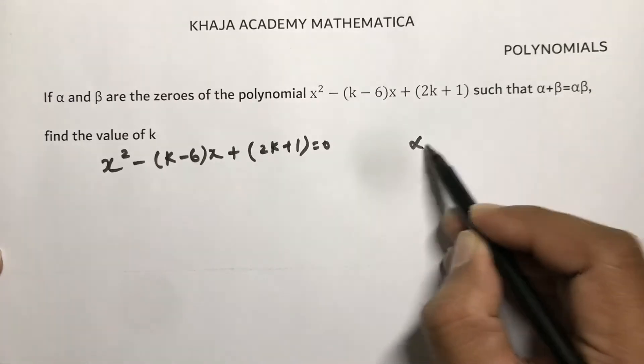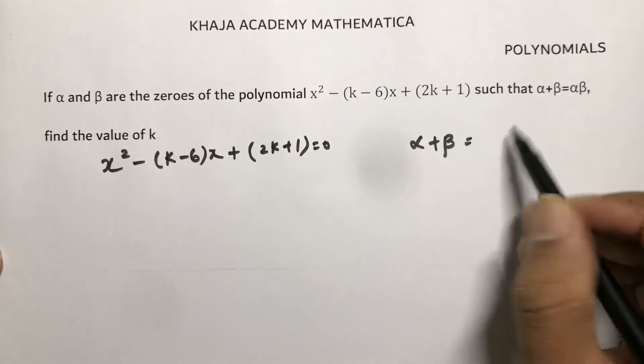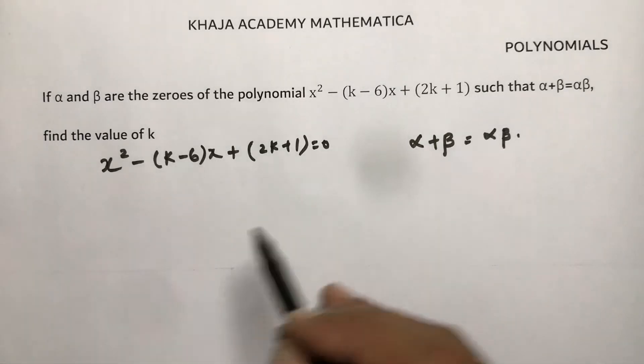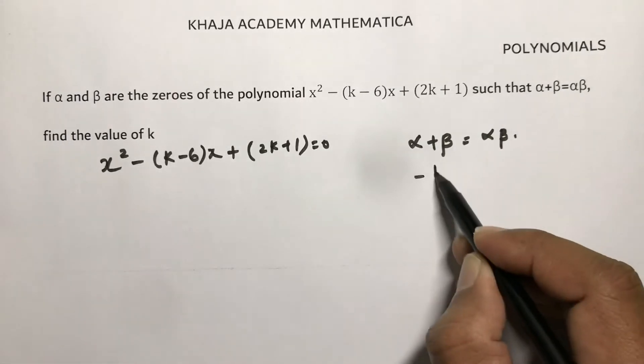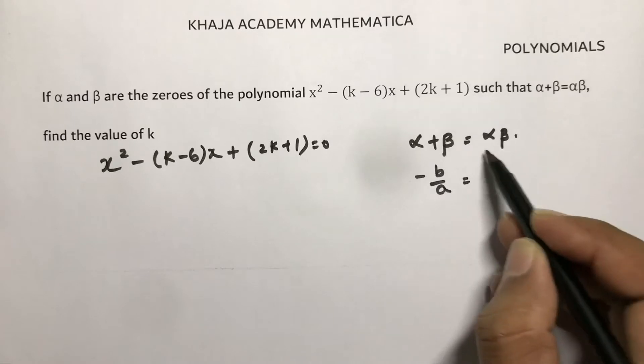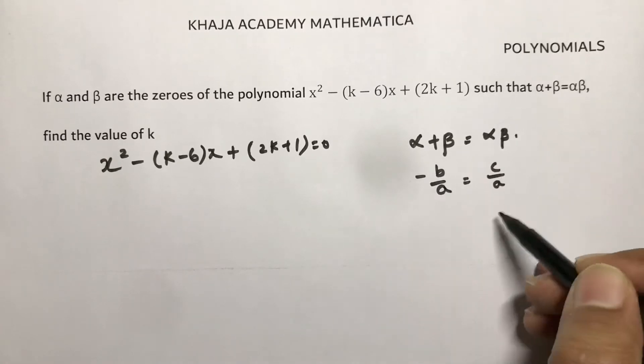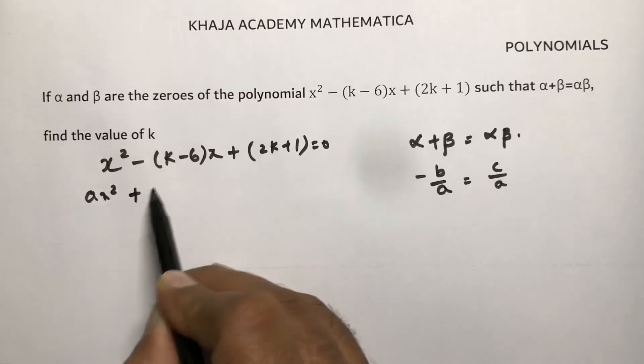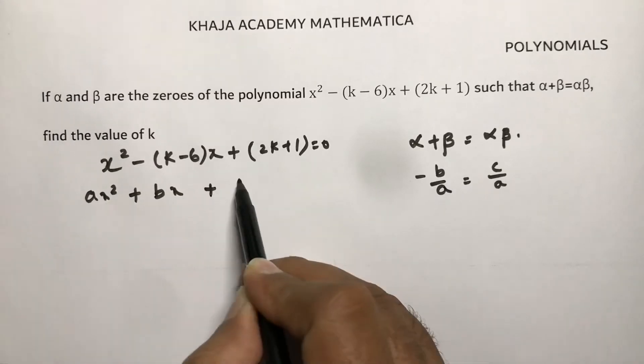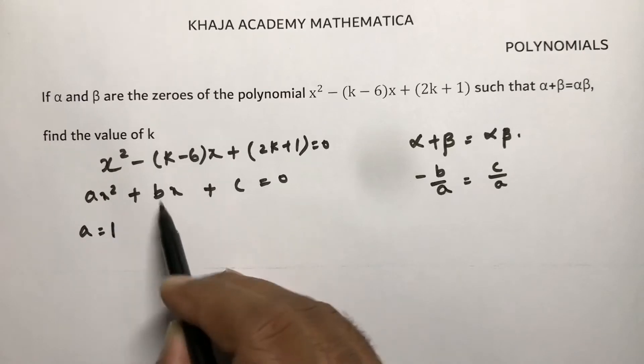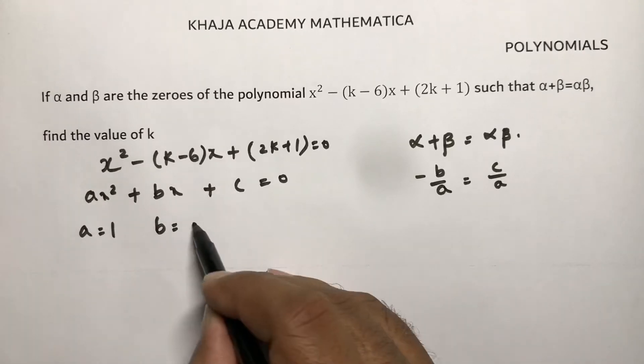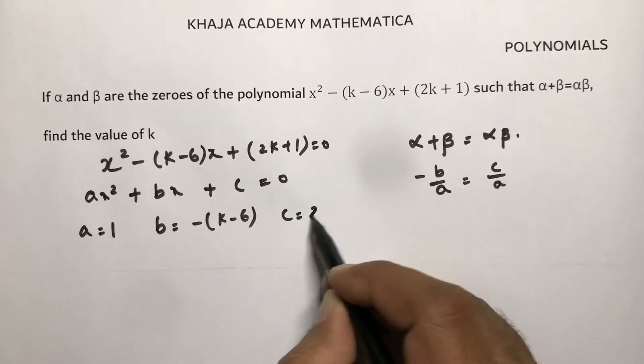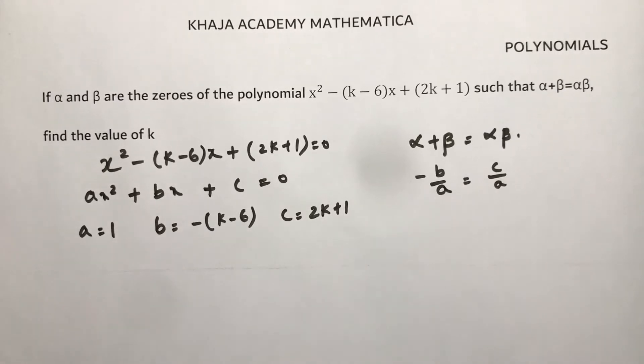Sum of the zeros, alpha plus beta, equals product of the zeros, alpha into beta. Alpha plus beta equals minus b by a. Product of the zeros equals c by a. If you compare with the standard equation ax² plus bx plus c, the value of a is 1, b is minus (k minus 6), and c is 2k plus 1.